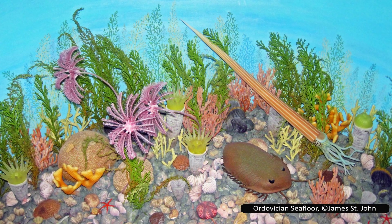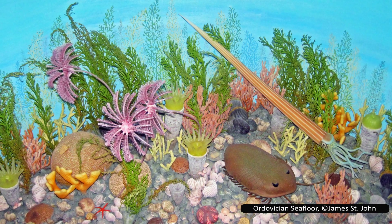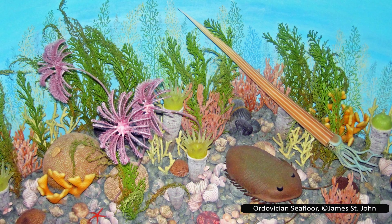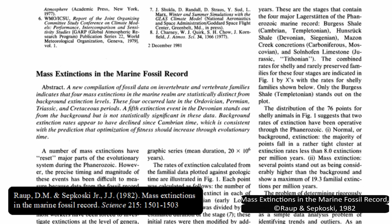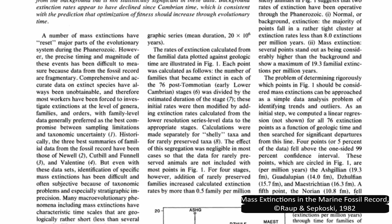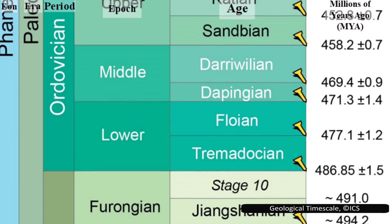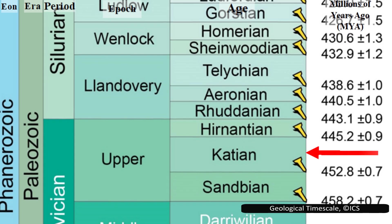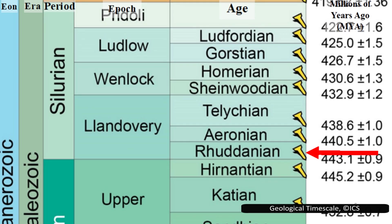Now, let's return to the dramatic finale of the Ordovician. This period ended with a significant event known as the Ordovician-Silurian extinction event, or the late Ordovician mass extinction. Notably, this event is the first of the Big Five — the five most catastrophic mass extinctions in Earth's history — initially proposed by Sepkoski and Raup in 1982. While some argue for additional events like the Capitanian or Holocene extinctions to be added to this list, the Big Five remain the most monumental losses of life recorded. The Ordovician-Silurian extinction event occurred roughly 445 million years ago, marking the end of the Ordovician period and continuing into the early Silurian. It holds the title of the second largest extinction in Earth's history, based on the percentage of genera that went extinct.